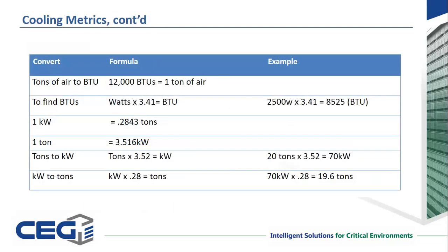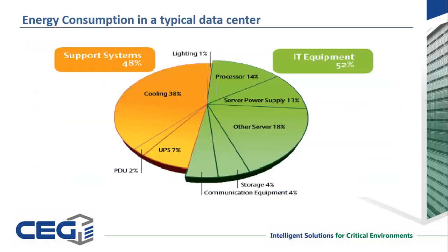This slide shows some of the same information, just looking at it a little differently. You'll see tons and kilowatts — one kilowatt is 0.2843 tons, or one ton is 3.516 kilowatts. Those are important metrics. I would suggest that those two things should be something you familiarize yourself with, and here's why — which is actually on the next slide.